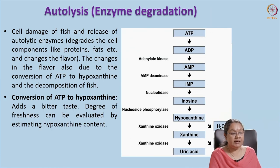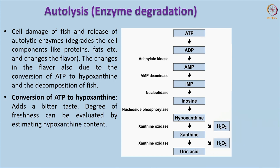Now let us see each type of spoilage, starting with autolysis or enzymatic degradation. As the name suggests, this happens because of enzymes present in the body of the fish. During autolysis, the enzymes escape from the cell — cell lysis happens and from inside the cell, these enzymes escape to the external environment and cause degradation of other macromolecules. Thereby, micromolecules and metabolites are formed which affect the flavor and odor of the fish.